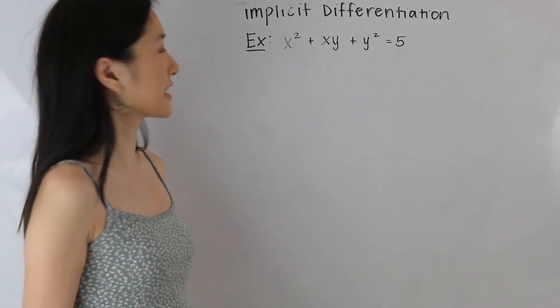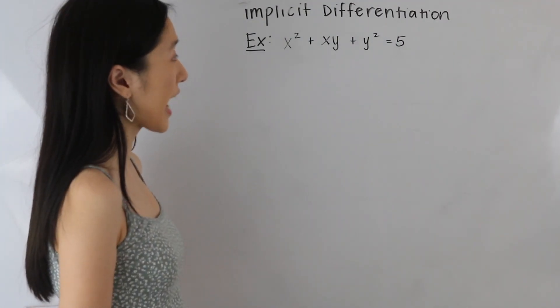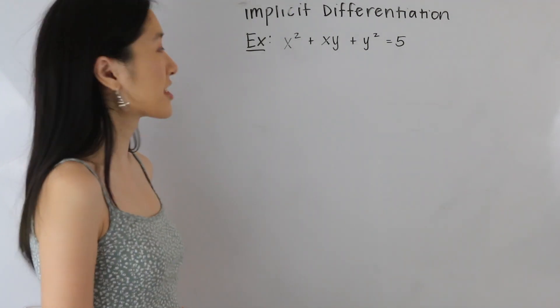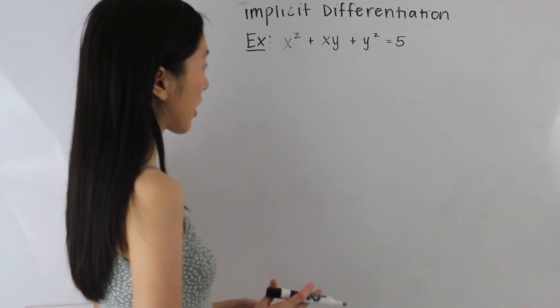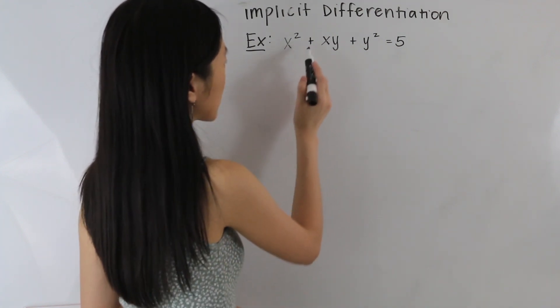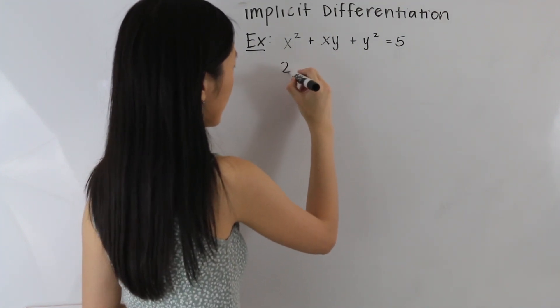In this next example, we have x squared plus xy plus y squared is equal to 5. Let's start out by taking the derivatives of each of our terms. We have x squared here, so the derivative of that is 2x.